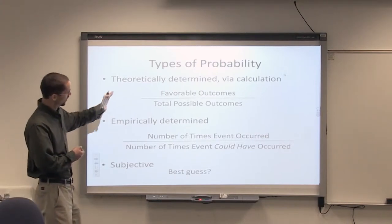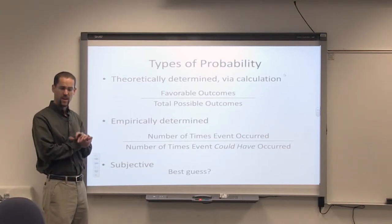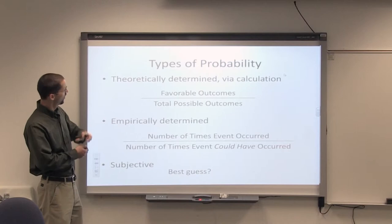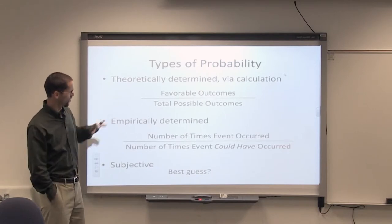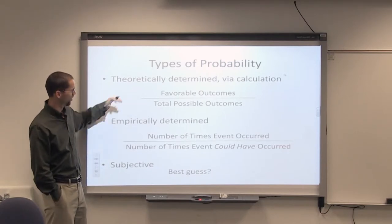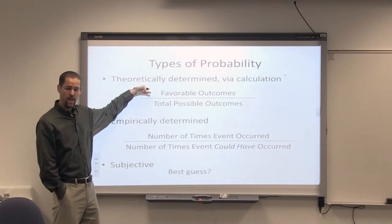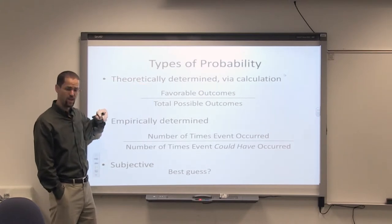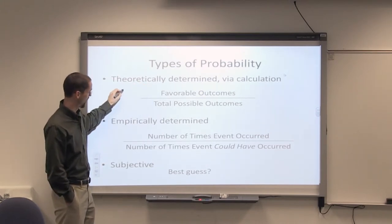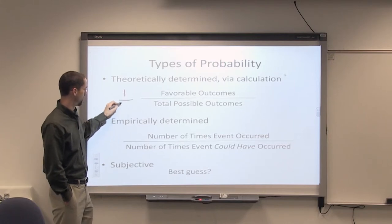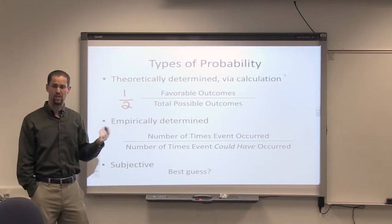Okay. Let's look and think about the definitions of these just a little more. Theoretically determined, remember the coin flip example. If we wanted it to come up heads, we call heads our favorable outcome. There was only one way for that to happen. And there were two possible ways the coin could have come up.